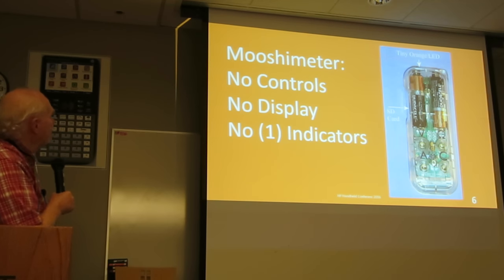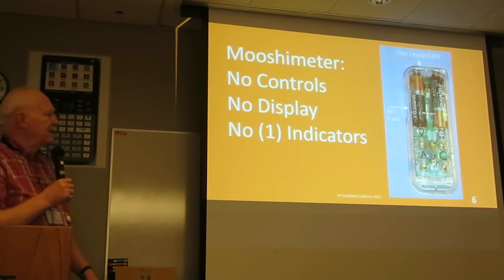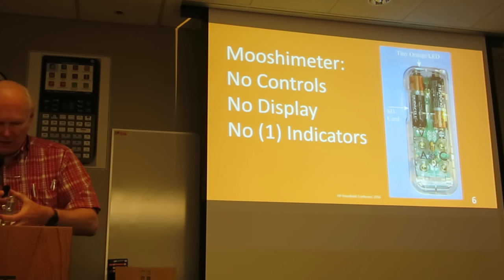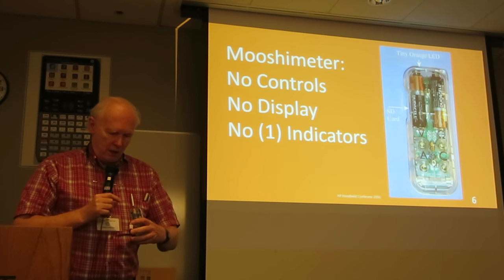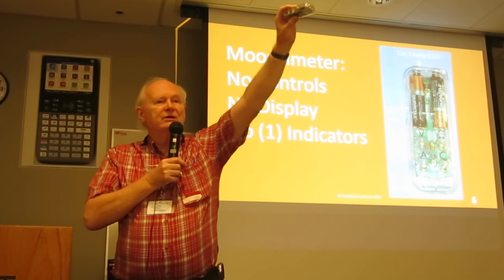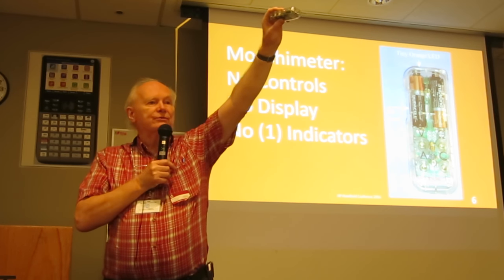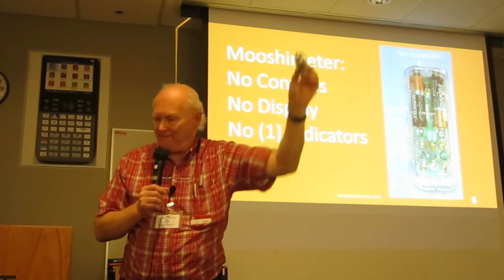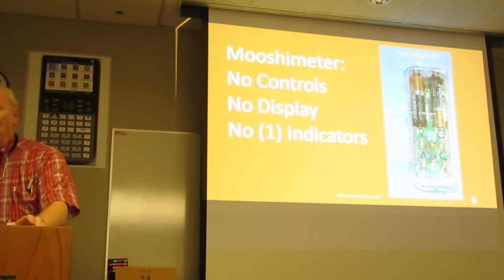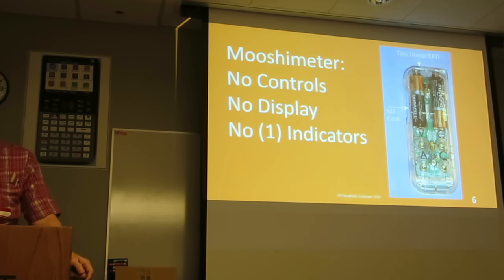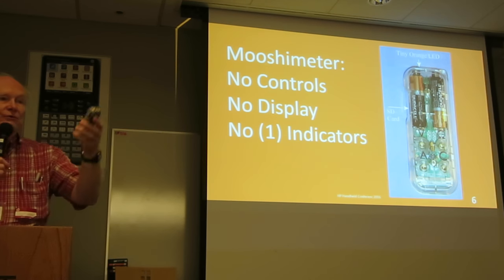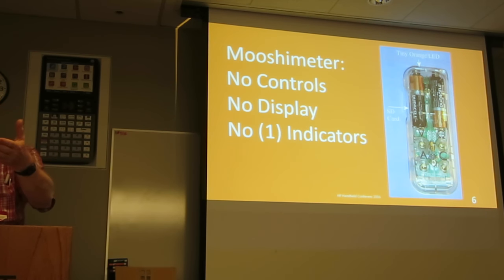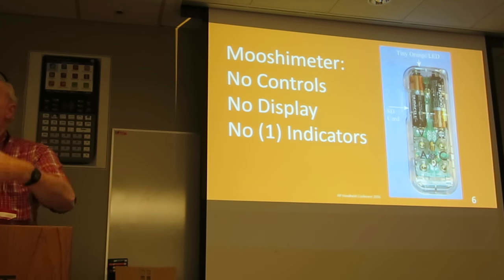I saw this meter and thought it was a perfect device to measure calculators. I'm going to call it the Motometer — generation 3. The Motometer has no controls, no display, and no indicators. Well, there is one — a little blinking orange LED. That's all you have. And believe me, if you think the calculator is hard to troubleshoot, can you imagine troubleshooting this? At least a calculator has an LCD display that is on, off, blinking, or displaying something unusual.